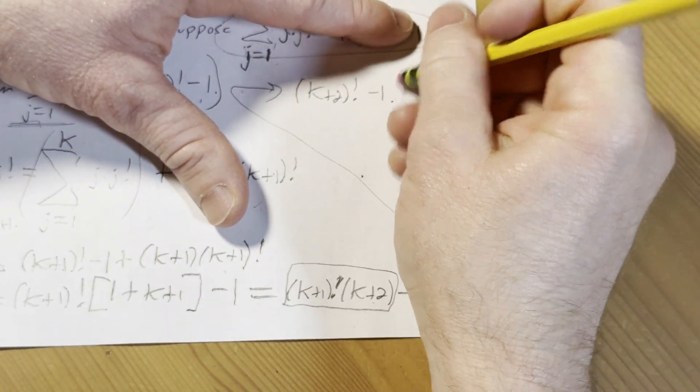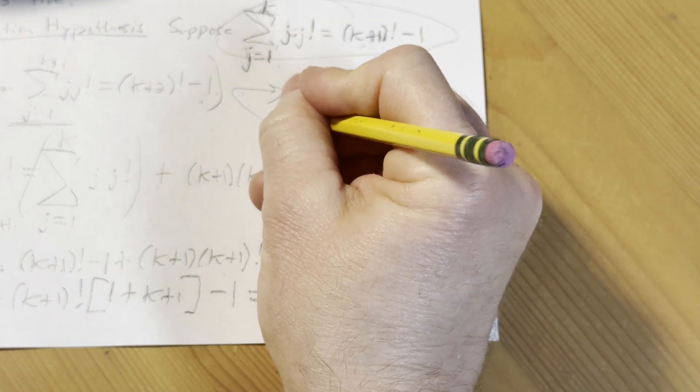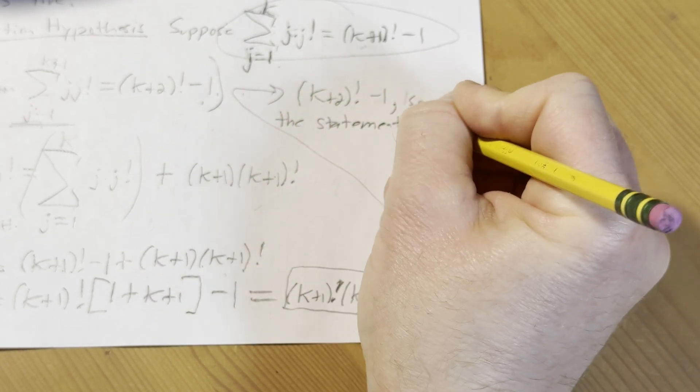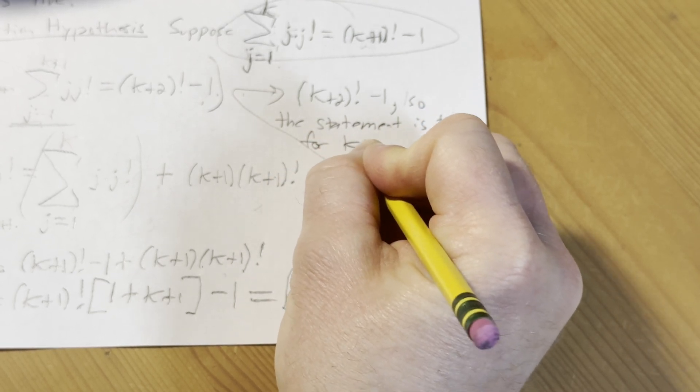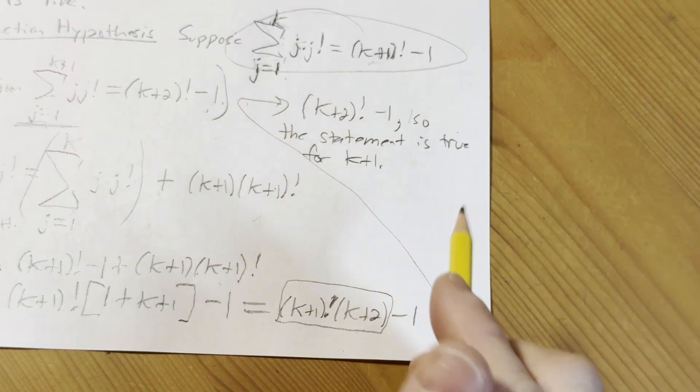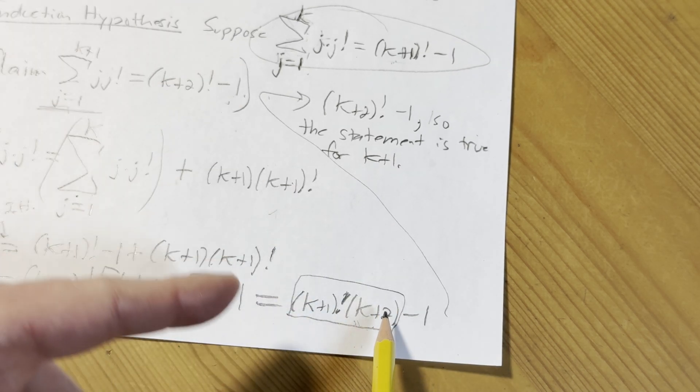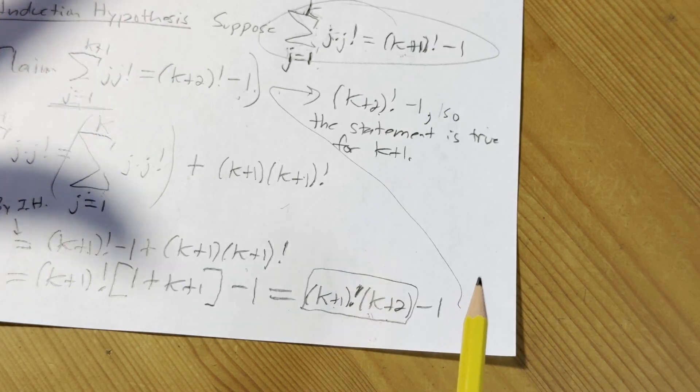So that, that, that, this shows, so the statement is true for k plus 1. Okay, let me just explain this step again here, because it might not be clear to some people. If you have k plus 1 factorial times k plus 2, it's k plus 2 factorial. Why? I'll squeeze it in down here.